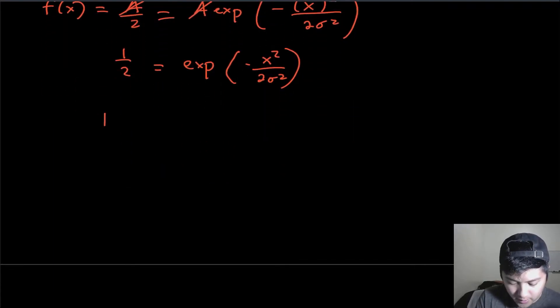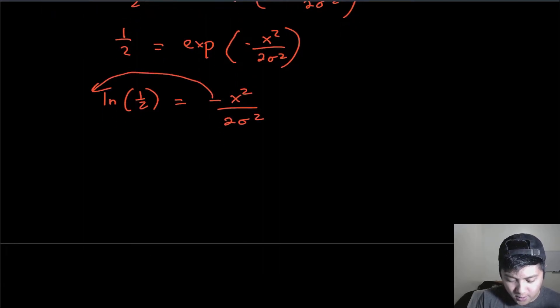We can take the natural log of both sides in order to cancel out the exponential. So this is going to equal negative x squared over 2 sigma squared. We're going to bring a minus sign over just for convenience. So we'll have negative log one half,